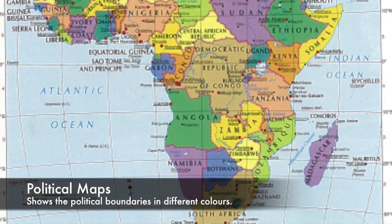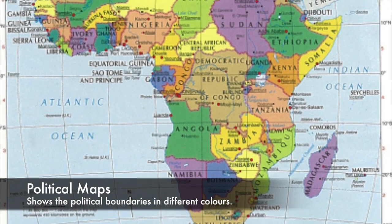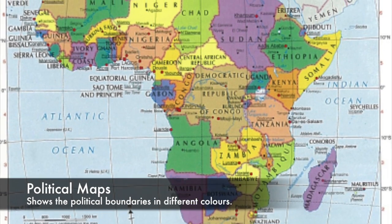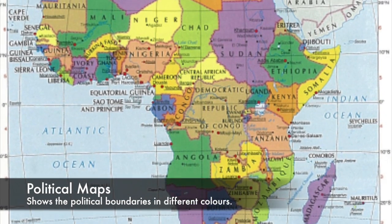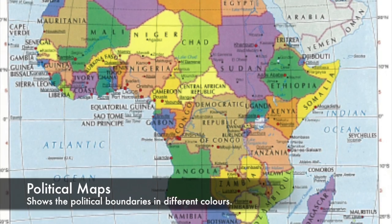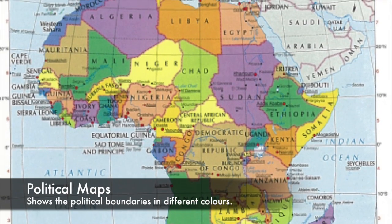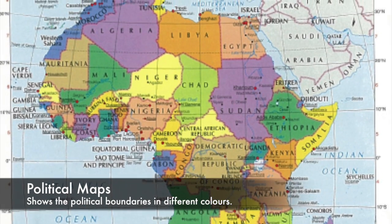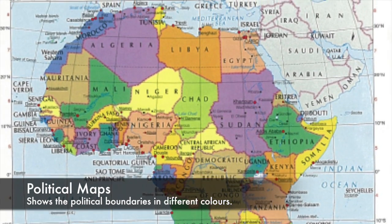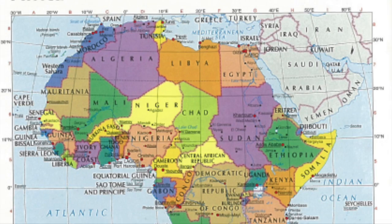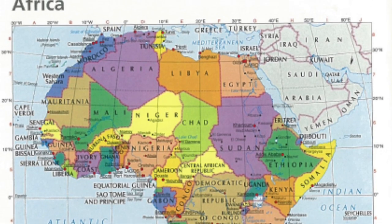The next type of map is political maps. The primary purpose of political maps is to show countries in different colours and their respective capital cities.